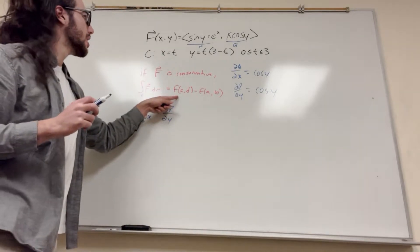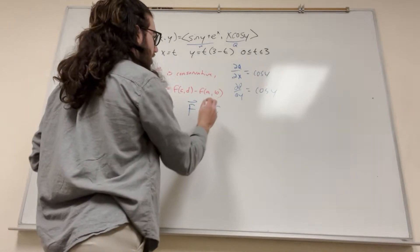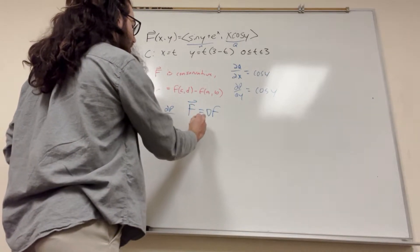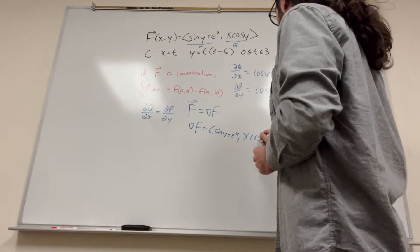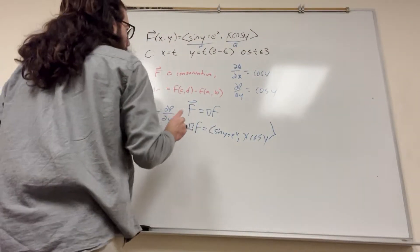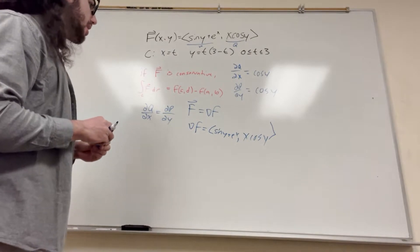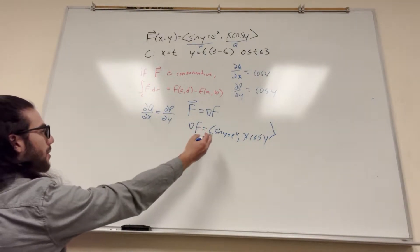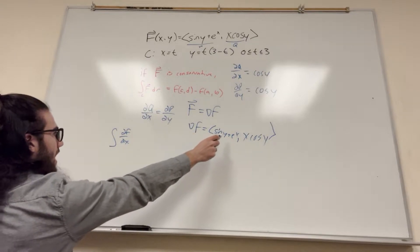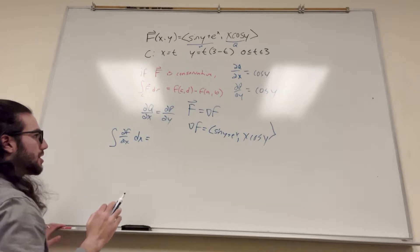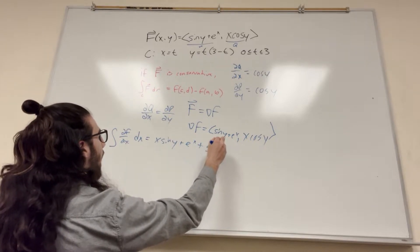So now we need to find a function. When we know that our field is conservative, it tells us that f is equal to the gradient of our function. So we can say the gradient of f is equal to sine of y plus e to the x, and x cosine of y — taken from up there. We need to take the integral and figure out what just f is instead of the gradient of f. So we're going to take the integral of the x-part with respect to x: df/dx, which is this part, dx. It's going to give us x sine of y plus e to the x plus some constant, which I'm going to call g of y — a function of y instead.